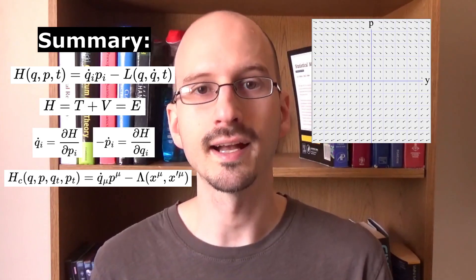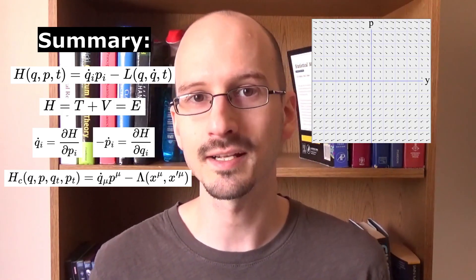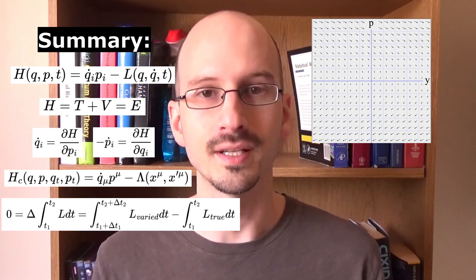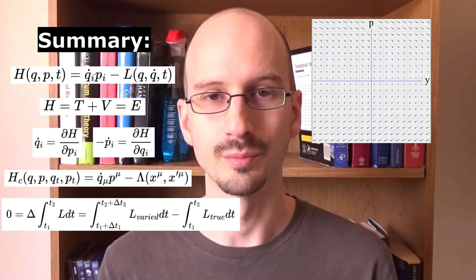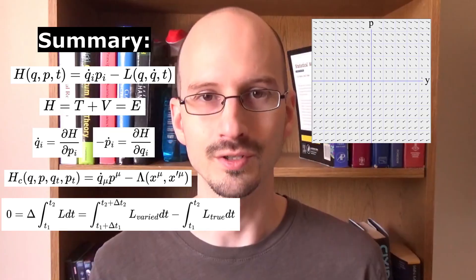We looked briefly at how to construct a Hamiltonian in relativistic mechanics, and we took a brief explanation on how to derive Hamilton's equations from a variational principle, namely the principle of least action.